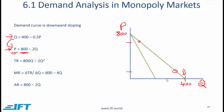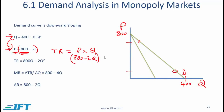Now what does the total revenue curve look like? Total revenue is going to be price times quantity. Price is 800 minus 2q, so multiplied by q, total revenue becomes 800q minus 2q squared.